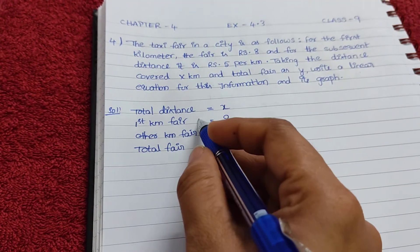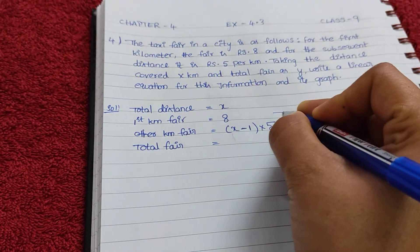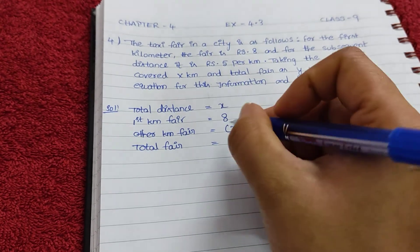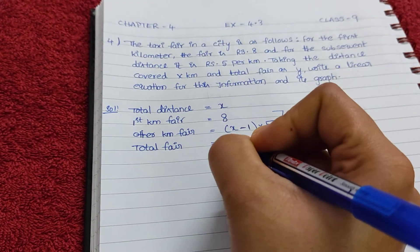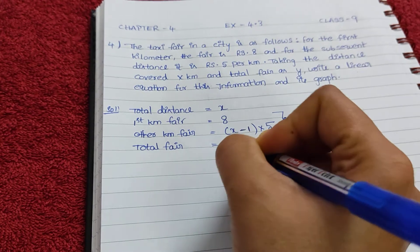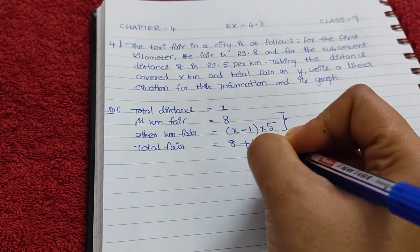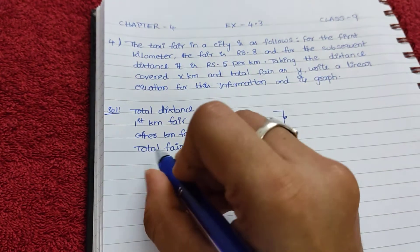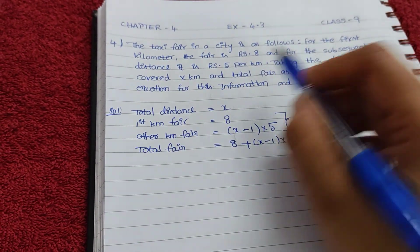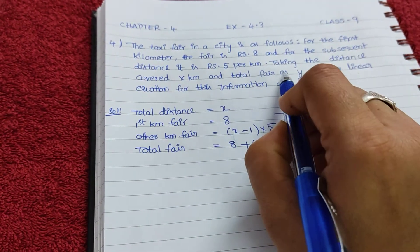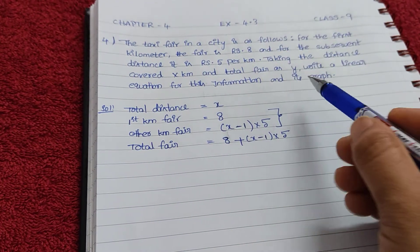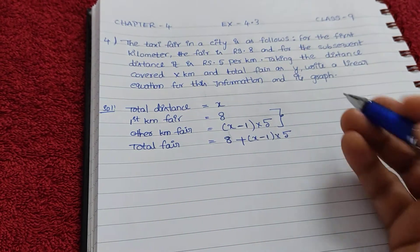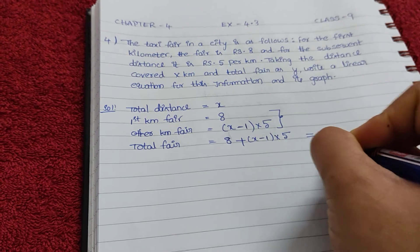Other kilometer fare is Rs. 5, so it's (x-1) times 5. Total fare means first kilometer and second kilometer combined. We should add. 8 plus (x-1) times 5. Total fare, here they given as y, so that equals to y.